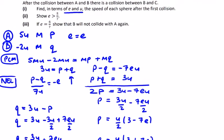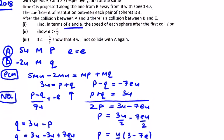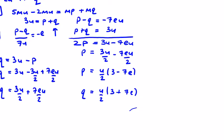Part (ii): Show e is greater than 5 over 7. After the collision between A and B, there is a collision between B and C, so B has to catch up with C. The velocity of B has to be greater than the velocity of C for there to be another collision.